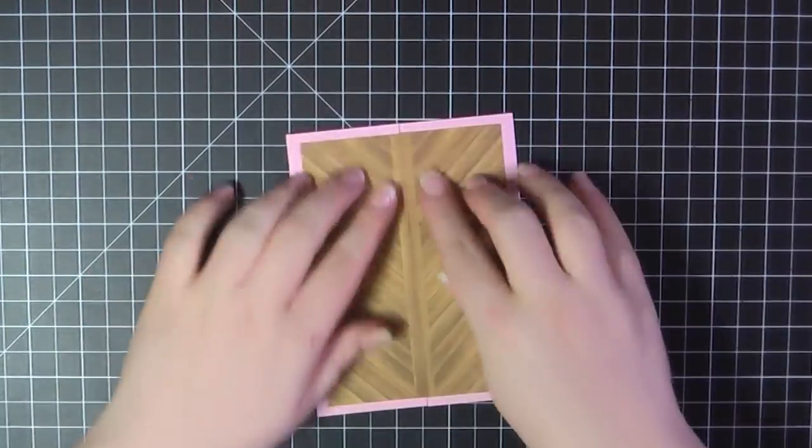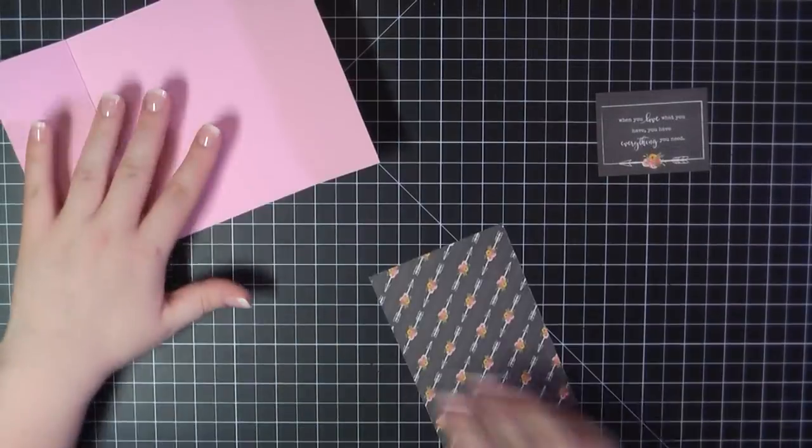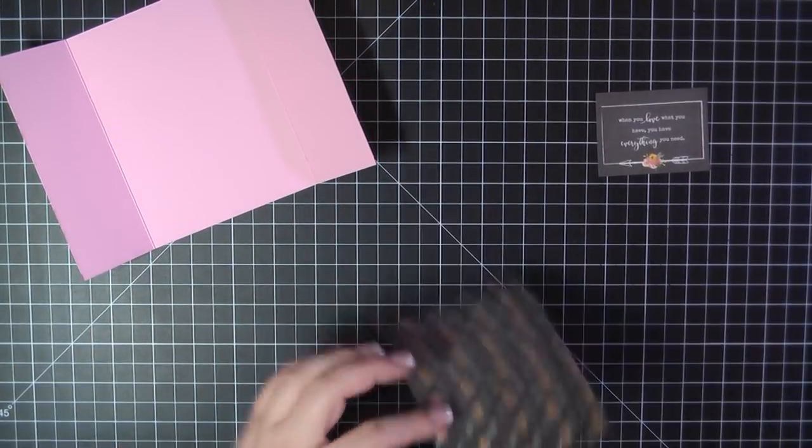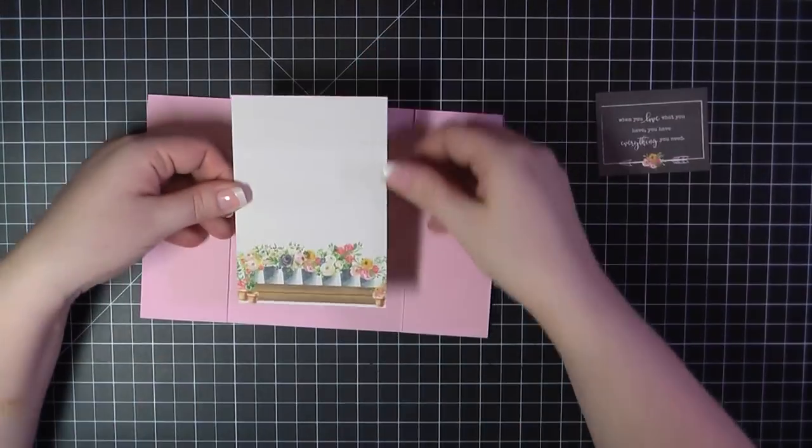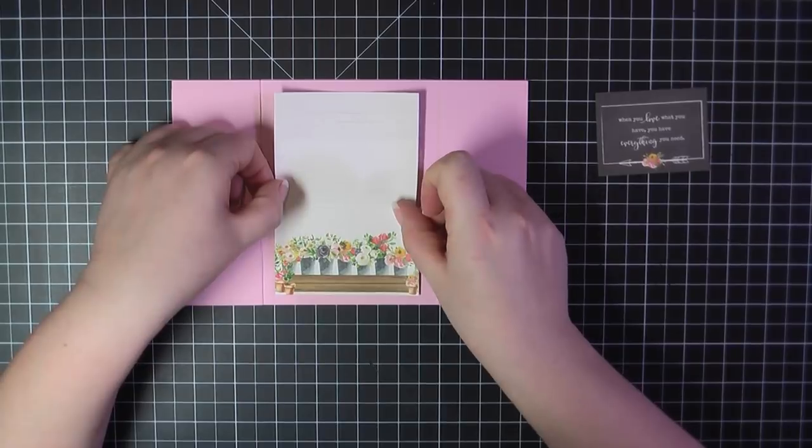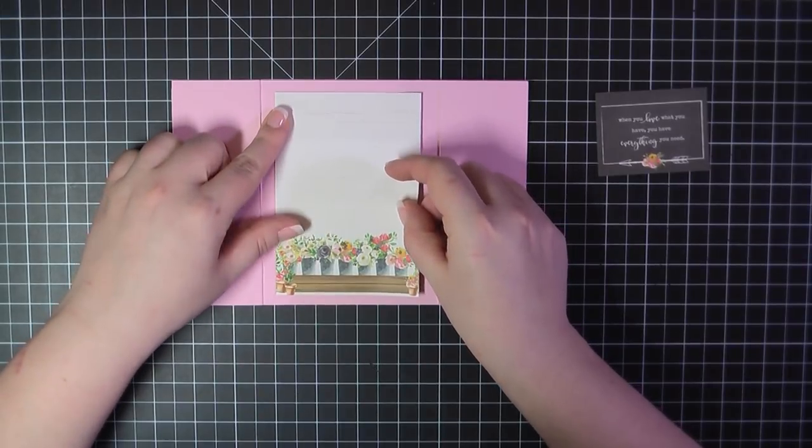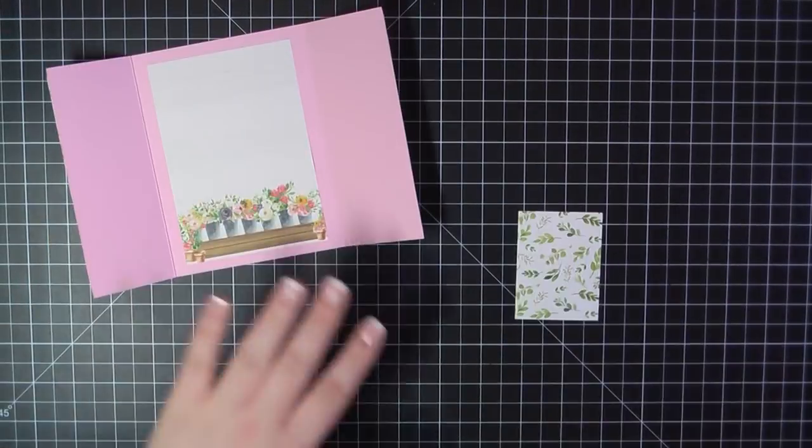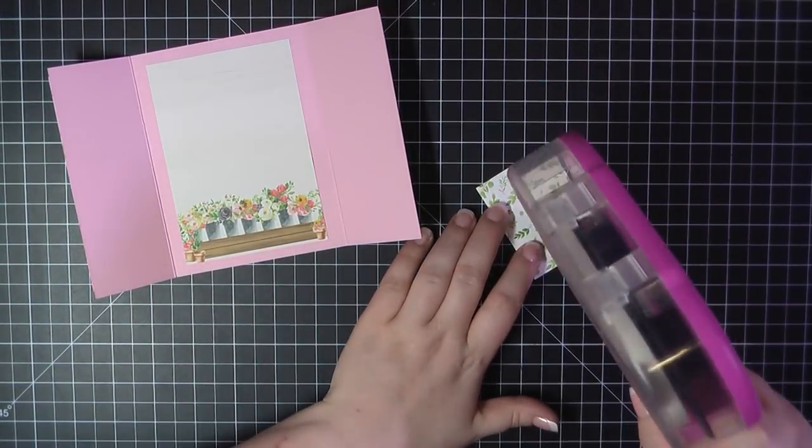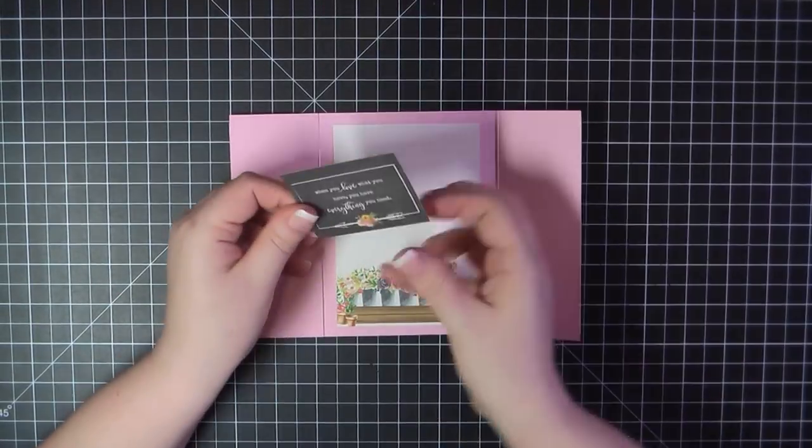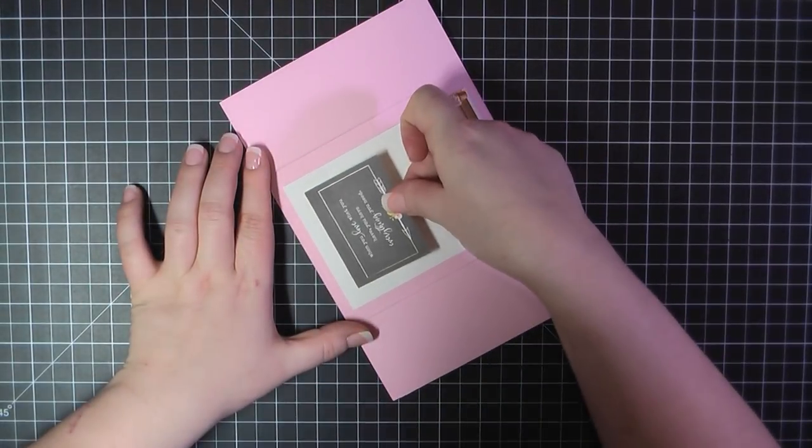I just make sure to match that up in the middle. Then for the inside, I'm using this additional piece of pattern paper that had the awning on it. I trimmed that out because I wanted it to look more like a windowsill and less like a storefront. That ended up measuring three and a half by five inches. I placed that on the center there with my ATG gun, and then I'm adding one of the cut aparts that says, when you love what you have, you have everything you need. I thought that was really pretty.